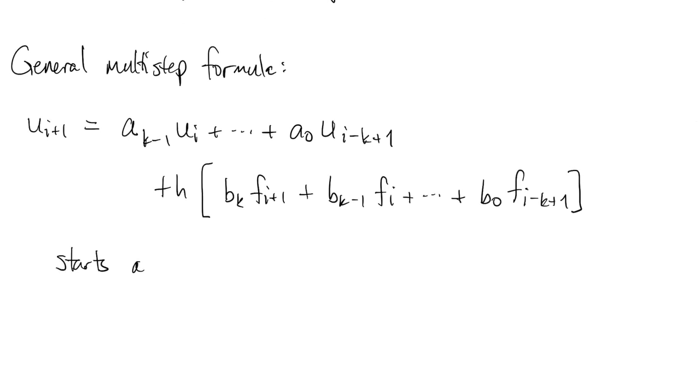We have to start this formula at i equals k minus 1 so that we don't get any negative time indices. This wouldn't make any sense. And we call this a k-step method.